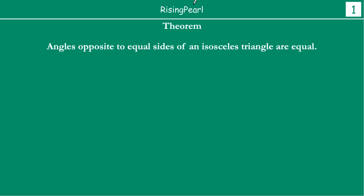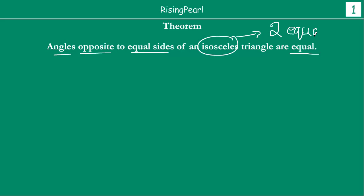So the theorem is: angles opposite to equal sides of an isosceles triangle are equal. So, what is an isosceles triangle? When we have two sides equal, or if we have a triangle with two equal sides, then we say that is an isosceles triangle. So the theorem is that angles opposite to equal sides — those two sides' opposite angles should be equal. That is what the theorem is telling us.